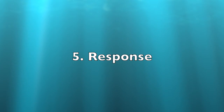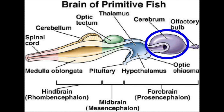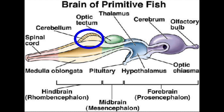Their response system has olfactory bulbs that are involved with the sense of smell. The cerebrum is responsible for involuntary activities of the body. The cerebellum, on the other hand, coordinates every body movement. Finally, the medulla oblongata has control over the functioning of a lot of the internal organs.